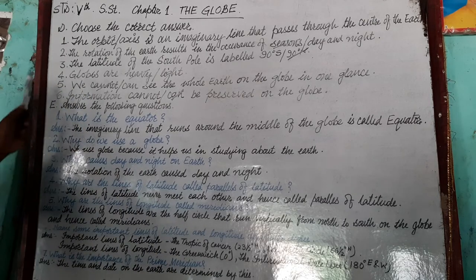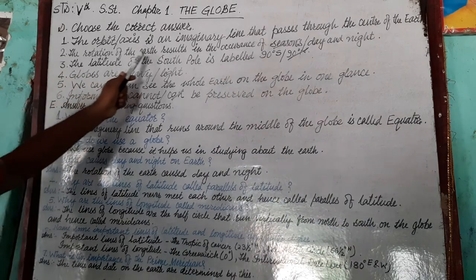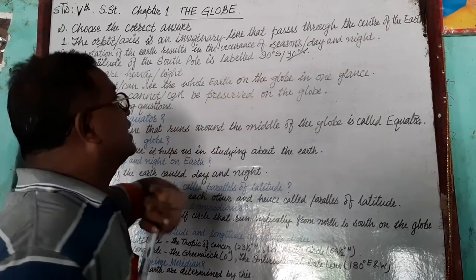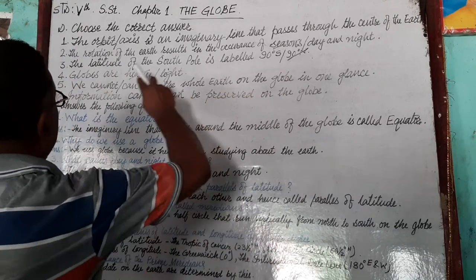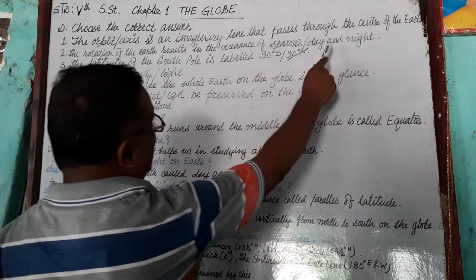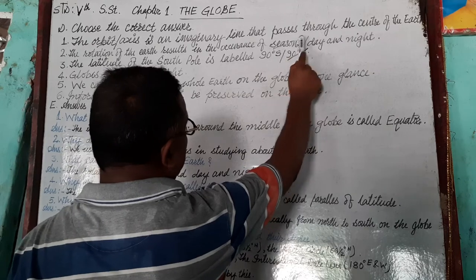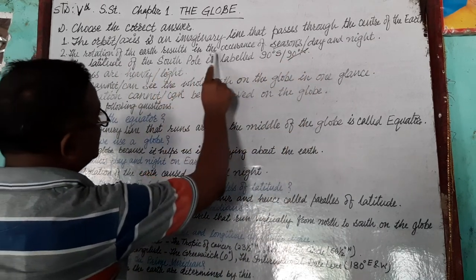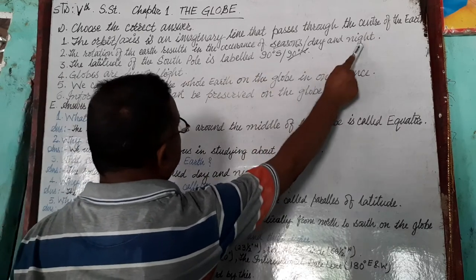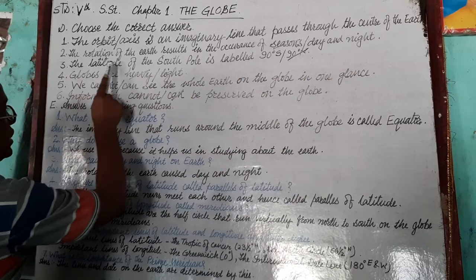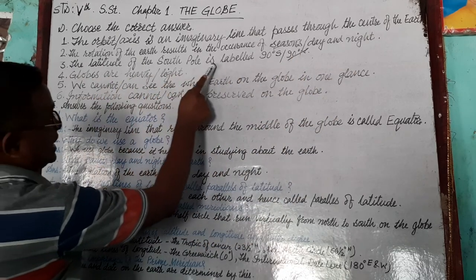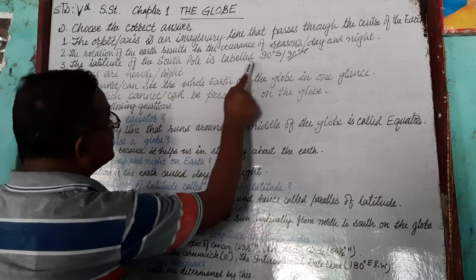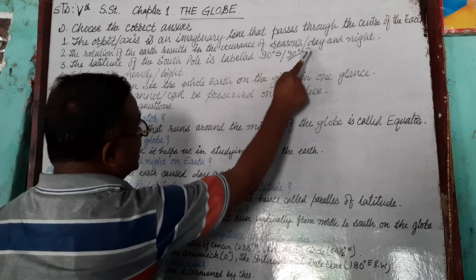The rotation of the earth results in the occurrence of day and night — not seasons. The latitude of the south pole is 90 degrees south. So the south pole is 90 degrees south.